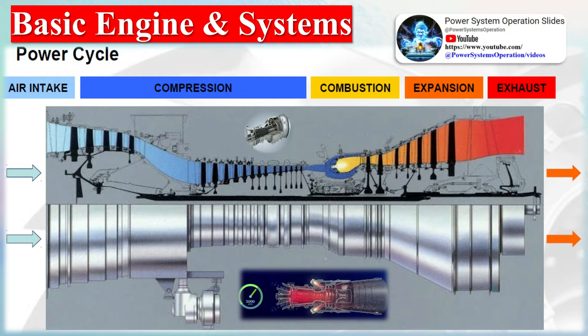In a jet engine the turbine is designed to provide just enough output to drive the compressor and auxiliary devices. The stream of gas then leaves the turbine at an intermediate pressure above local atmospheric pressure and is fed through a nozzle to produce thrust.